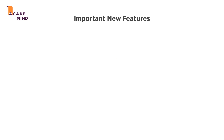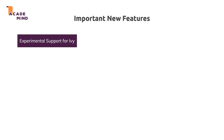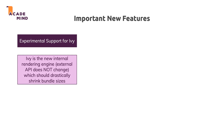Let's start with the new features Angular 8 brings. The first and probably most important feature is the experimental support for Ivy. Ivy is the new internal rendering engine the Angular team is working on, and that means the external API — the code you write — doesn't change at all. The internal renderer is the part of the framework responsible for taking your templates and compiled instructions and bringing something onto the screen efficiently, and it's also responsible for wiring up change detection.